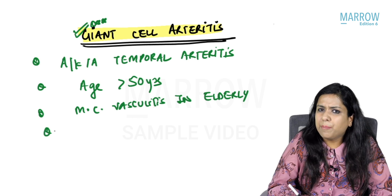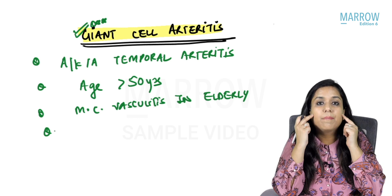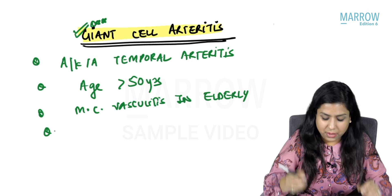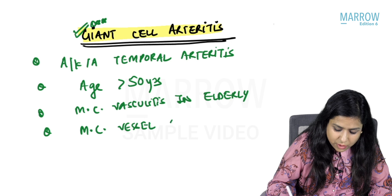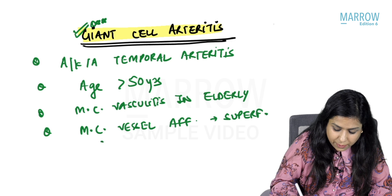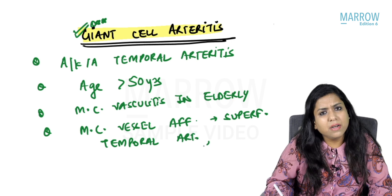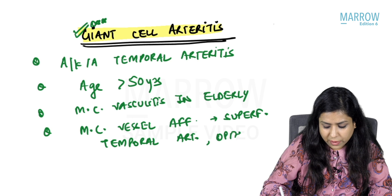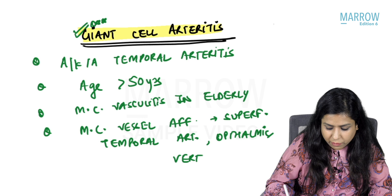It is called temporal arteritis, so the most commonly affected vessel is the superficial temporal artery. Other vessels which can also be affected include the ophthalmic artery and vertebral arteries.